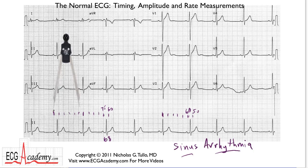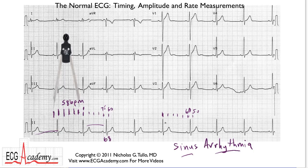In terms of heart rate, you can make gross measurements without counting tiny boxes. Start and count off the numbers: 300, 150, 100, 75, 60 — it's a little less than 60 but nowhere near 50. So again, about 58 beats per minute, abbreviated BPM. This first beat is 58 beats per minute, but there's a normal degree of sinus arrhythmia such that sometimes it's at 68, and sometimes it's down to 55. That is your basic approach to determining heart rate.